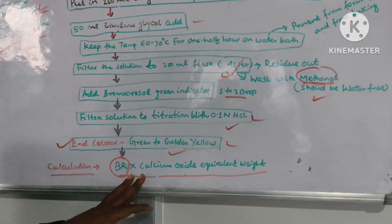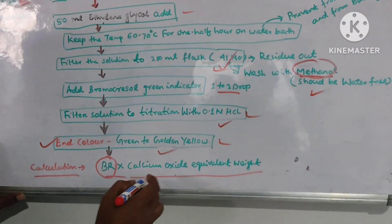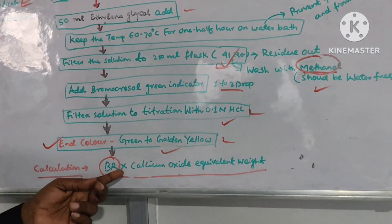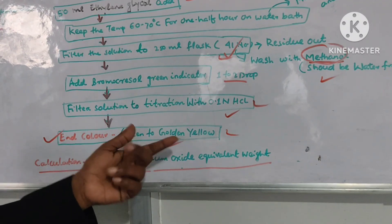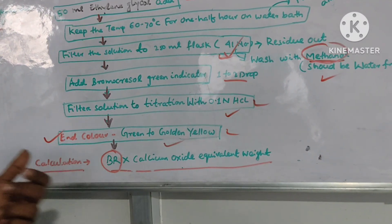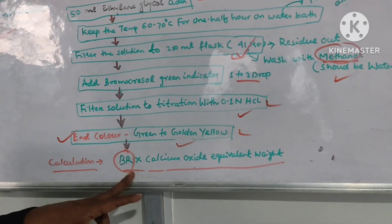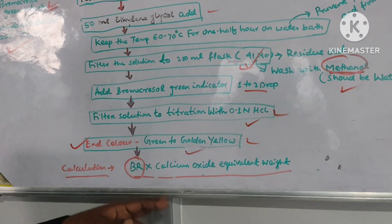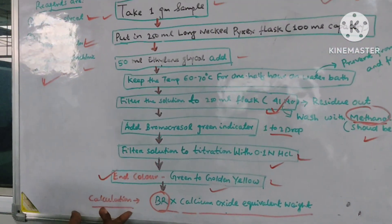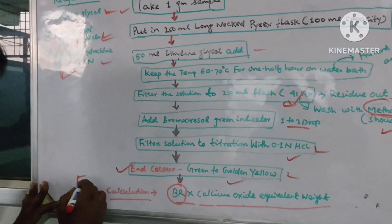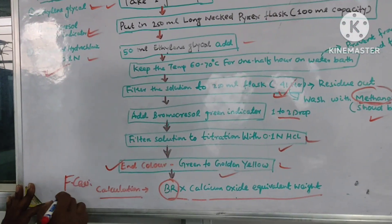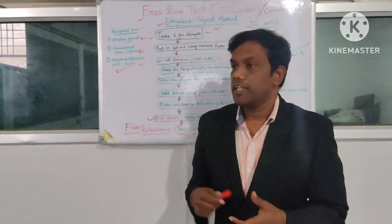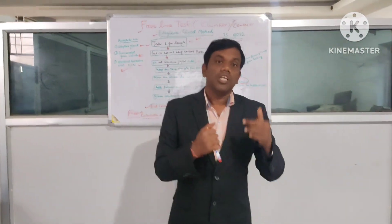Finally, the burette reading: when the color changes to golden yellow we stop, note that reading — it is called the burette reading — and multiply by the equivalent weight of calcium oxide (CaO). That is the final calculation and you can calculate the free lime, also called FCaO.